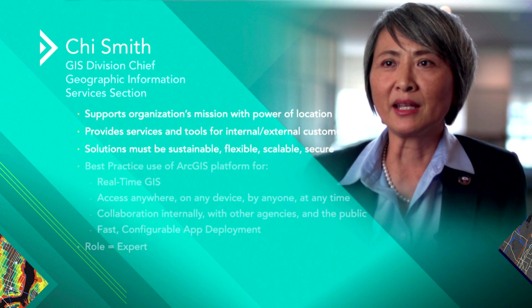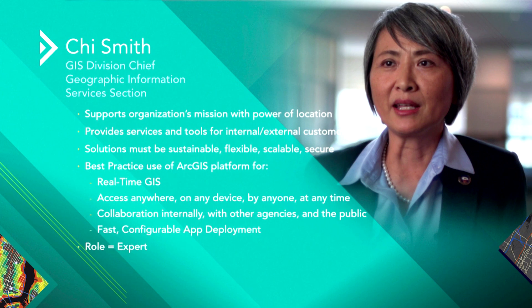The GIS division chief's goal — which many of you share — is simply to support your organization's mission with the power of location. She's got to deploy the platform using best practices, with a focus on real-time GIS for emergency services, providing access on any device, and collaborating internally with other agencies and the public. She wants fast, configurable app deployment with little risk. Her role is that of an expert who deploys the entire platform. There are people just like this in your organization — a Dan, a Dwayne, a Jose — and they need access to these kinds of apps. The GIS division chief said they already owned the software; they simply weren't deploying it the right way.